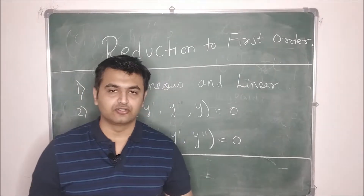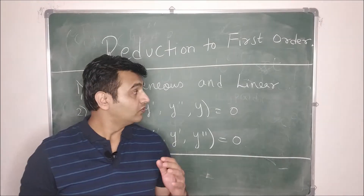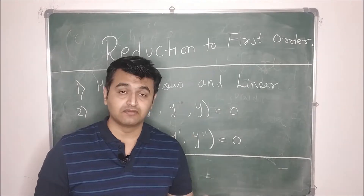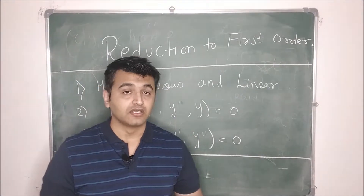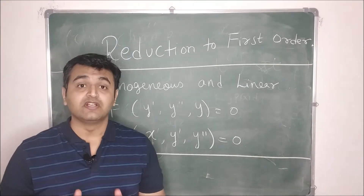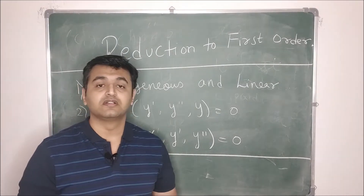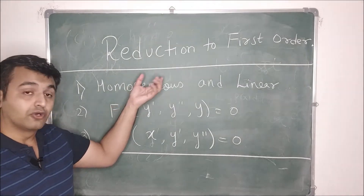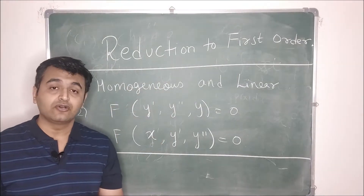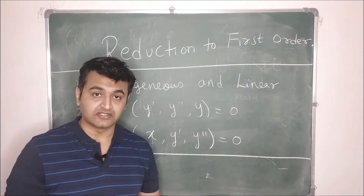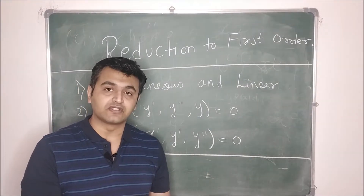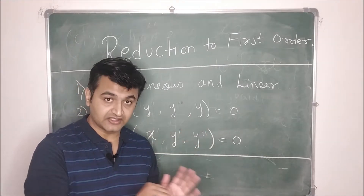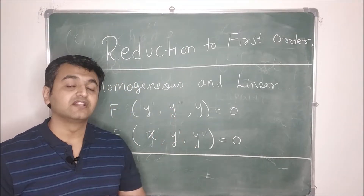Welcome to the 10th lecture on ordinary differential equations. In the last lecture we saw what is meant by second-order differential equations, what is meant by basis, and what is meant by the general solution. Today we are going to see the first method to find the solution of a second-order differential equation, called reduction to first-order. This method reduces a second-order ODE into a first-order differential equation, and once reduced we can use the six methods seen in the first seven lectures.